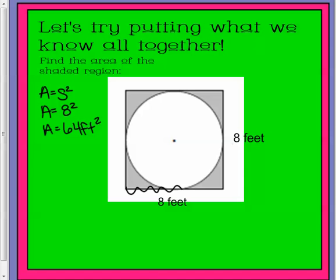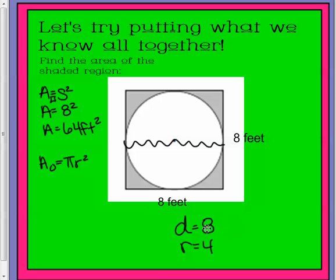If this is our length of our square, it's also our diameter. So we have our area of our square, and we need our area of our circle. So if our diameter of our circle is 8, our radius of our circle is 4.